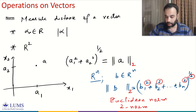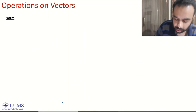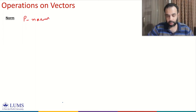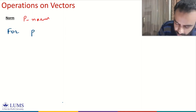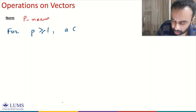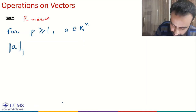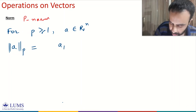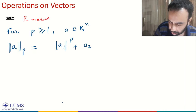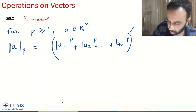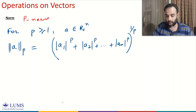We can generalize this concept to define the p-norm for any p greater than or equal to 1. For a vector a belonging to Rn, the p-norm uses the same double-bar notation with a subscript p, and the definition is: the sum of |a1|^p + |a2|^p + ... + |an|^p, all raised to the power 1 over p. If we use p equal to 2, we recover the Euclidean norm or 2-norm.